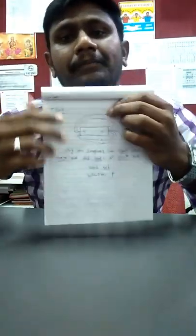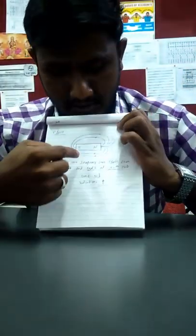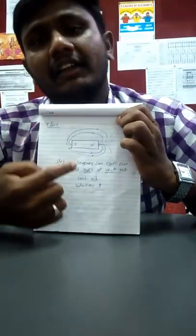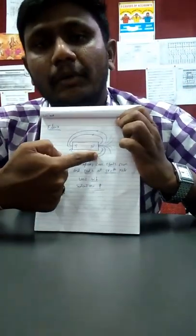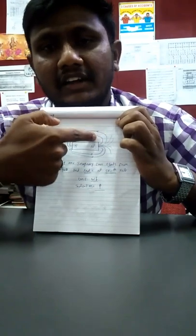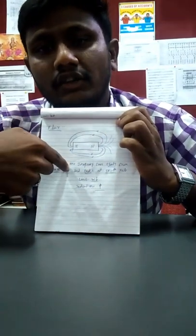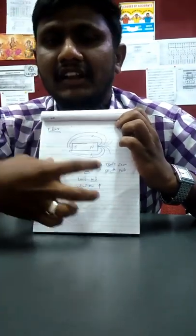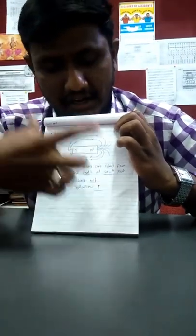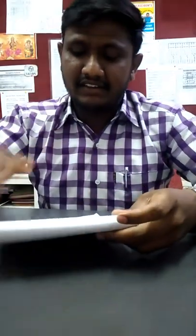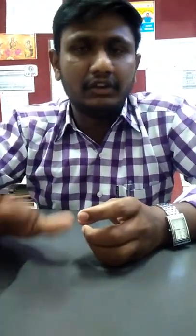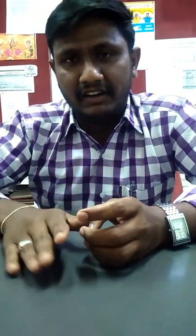This is the diagram. Let's see. In the north pole, we can start a flux in the south pole. This is the general flux. This flux is the unit — in the north pole, we will talk about 5. This is the general flux.